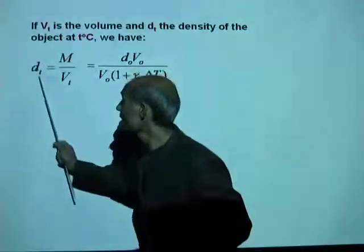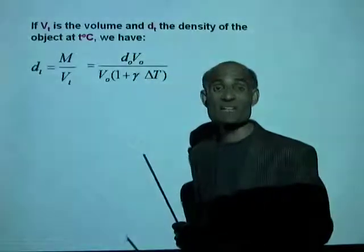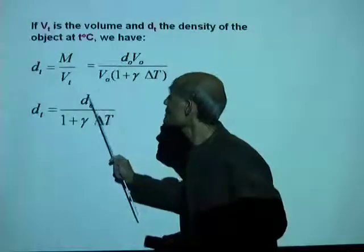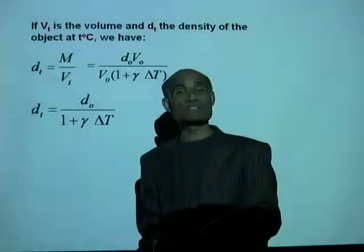So density of that object at a higher temperature T degrees Celsius: Dₜ equal to D₀ over 1 plus gamma delta T.